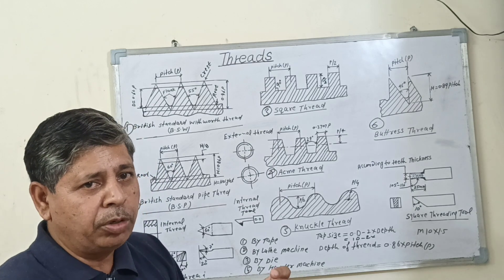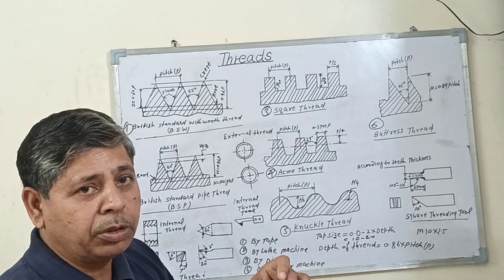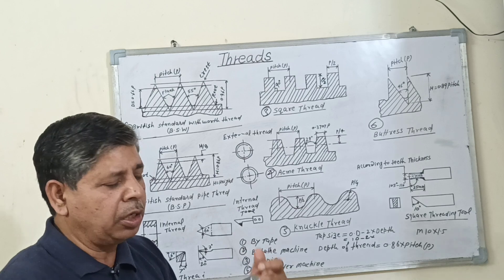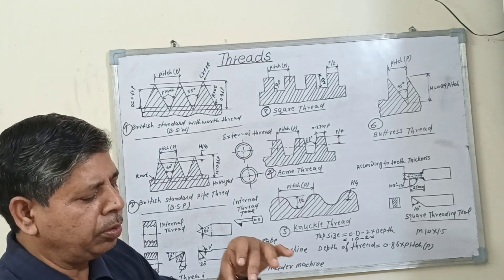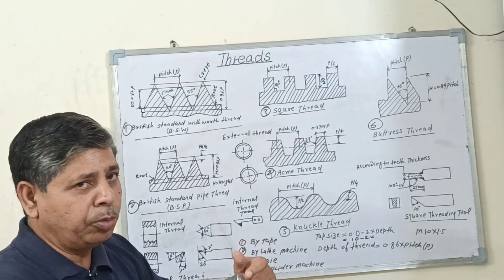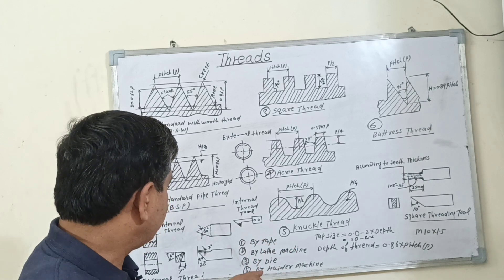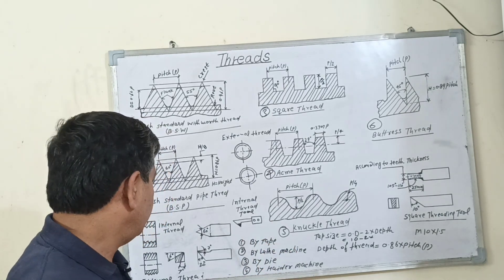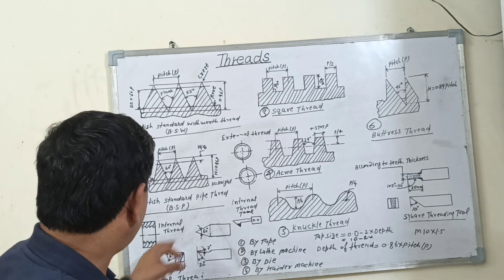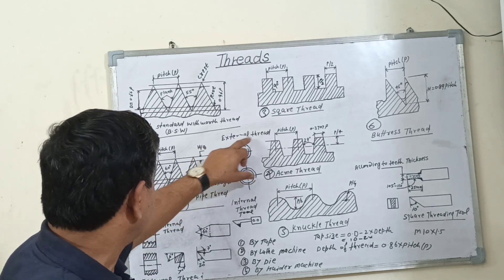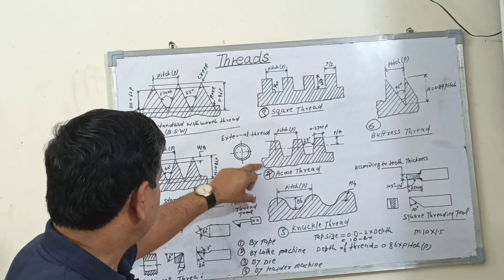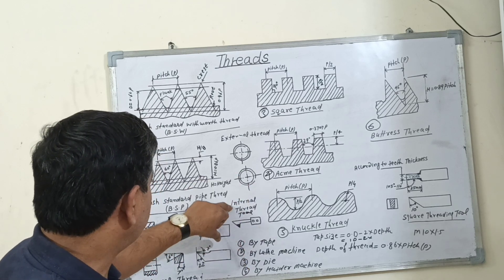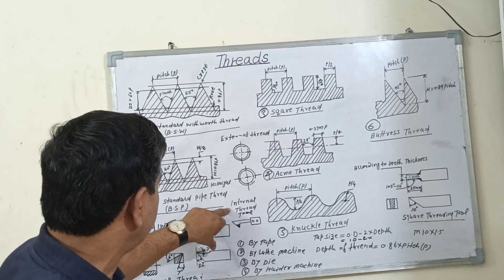If you want to cut thread on 1000 bolts per hour, the header machine is used for production. This sign indicates external thread, and this symbol represents internal thread.